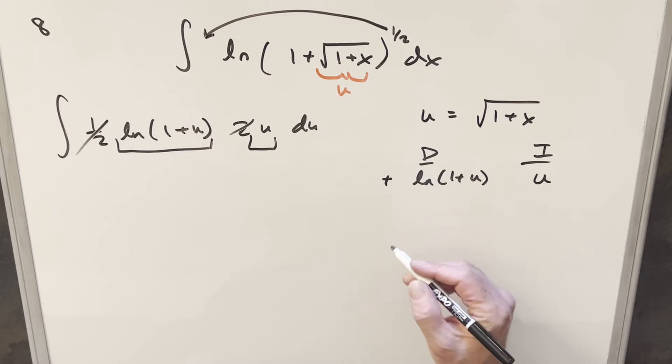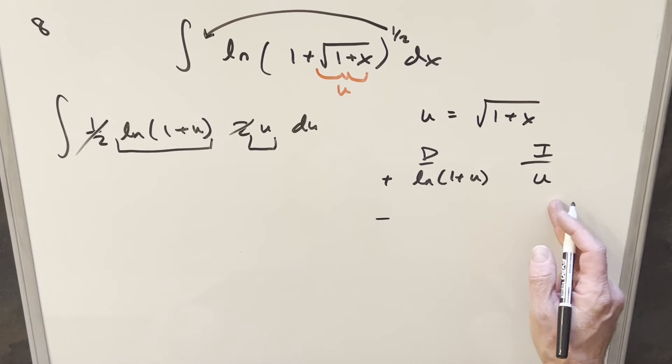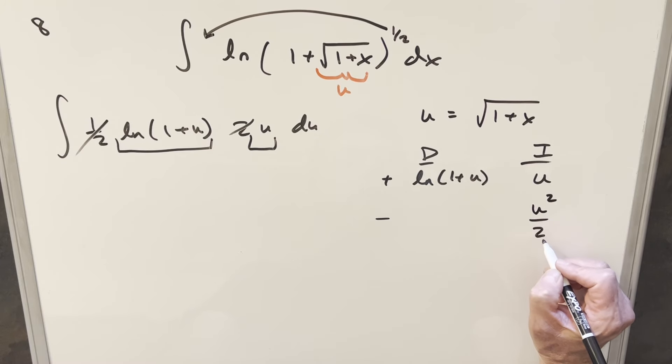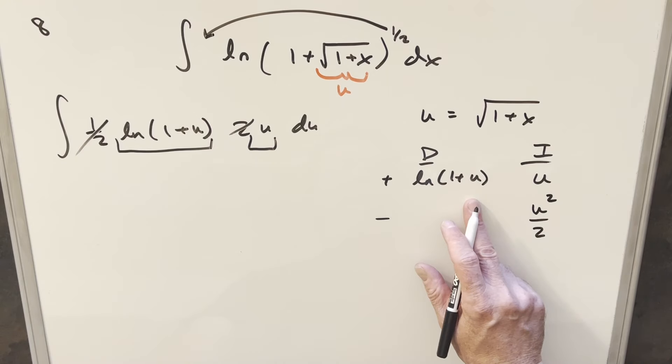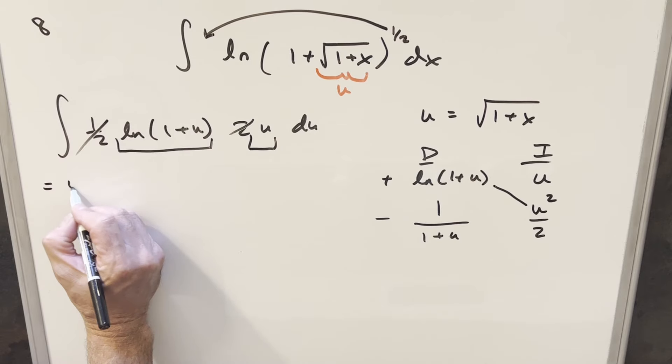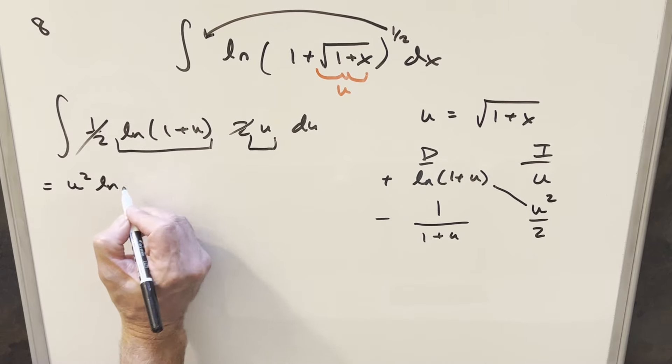Okay, so we have our table for the di method set up over here to the right. First, let's just integrate u, when we do that we're going to have u squared over 2 here. Then, differentiating natural log 1 plus u, that's just going to be 1 over 1 plus u. So part of our solution in u is going to be right here, so let's do that as u squared natural log 1 plus u all over 2.